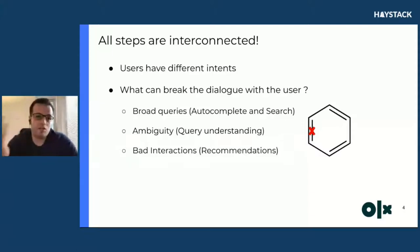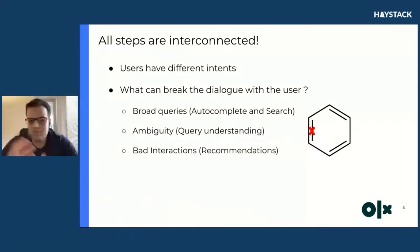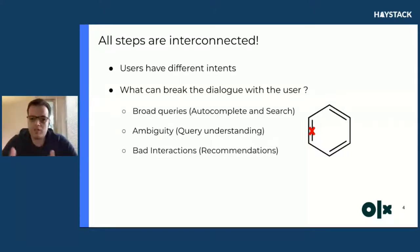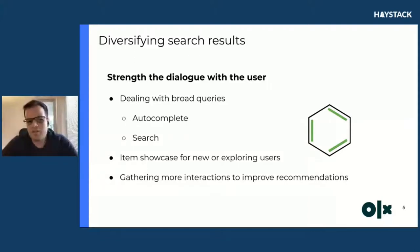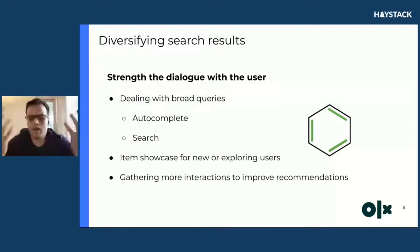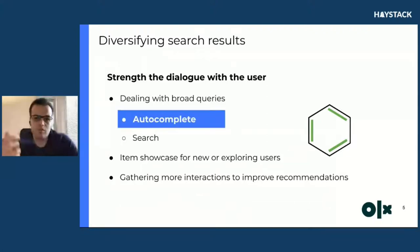All those steps are very interconnected, but users have different intents. It's not a problem only for OLX, but for commerce in general. What can break this dialogue with the user? Broad queries can break autocomplete and search. Ambiguity can break understanding. Bad interactions can break recommendations. And one of the things we believe is that diversifying search results can strengthen the dialogue with the user — especially when dealing with broad queries to showcase items for new and explorer users and to capture more information to improve recommendations.